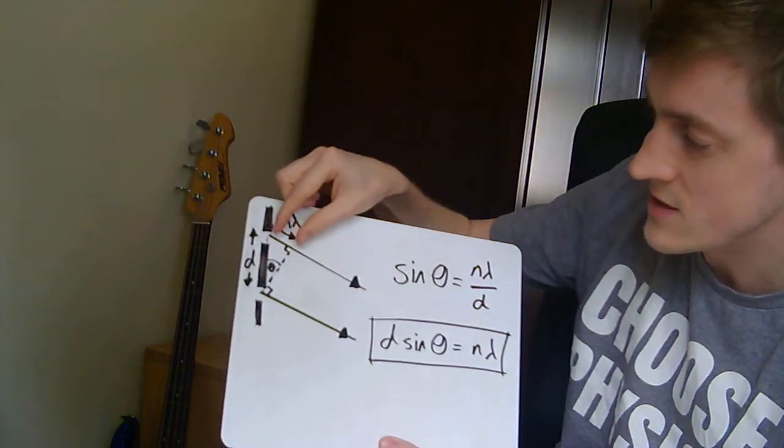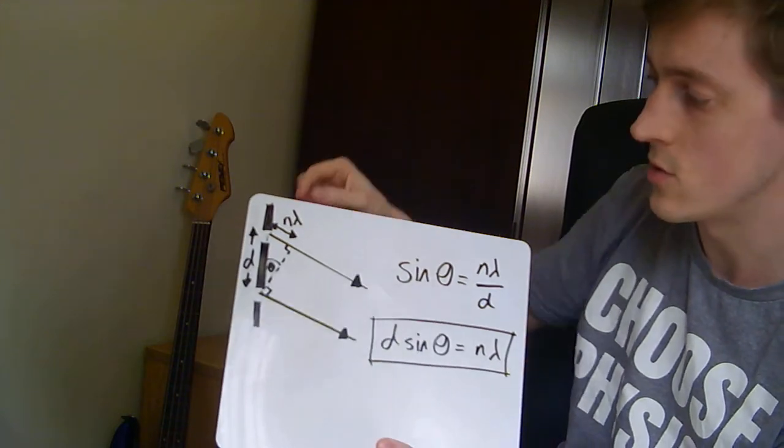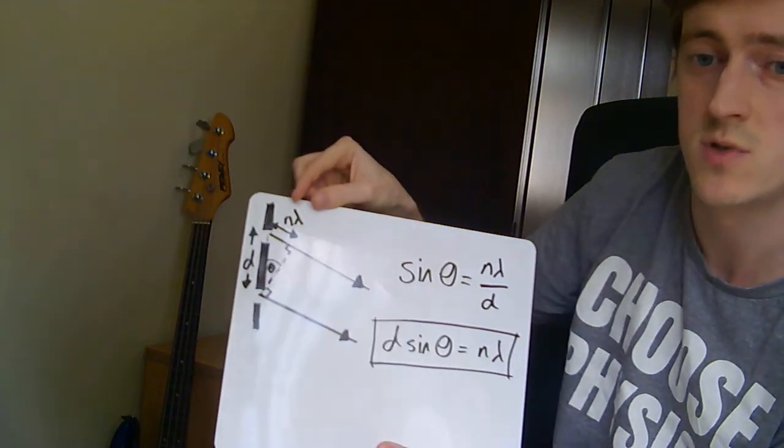So this distance here is n lambda, where n is a whole number. So this whole n lambda thing just means some sort of multiple, some whole number multiple of the wavelength of the light that we're using.